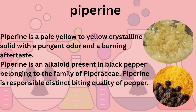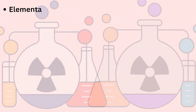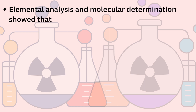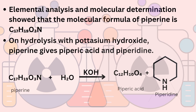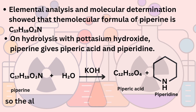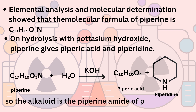Structure elucidation of piperine: Elemental analysis and molecular determination showed that the molecular formula of piperine is C17H19O3N. On hydrolysis with potassium hydroxide, piperine gives piperic acid and piperidine. So the alkaloid is the piperidine amide of piperic acid. Since we know the structure of piperidine, we now need to find out the structure of piperic acid.